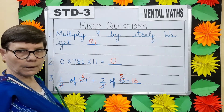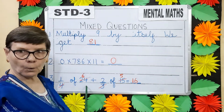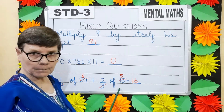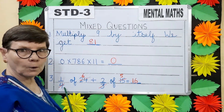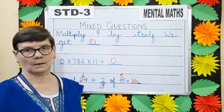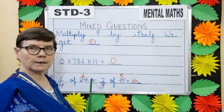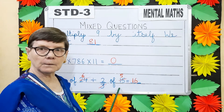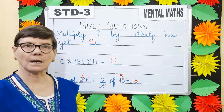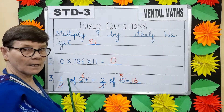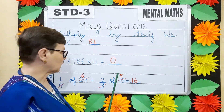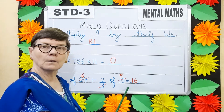Number 3: 1/4 of 24 plus 2/3 of 15. Now divide 24 by 4 — say your 4 times table till you come to 24. 4 sixes are 24. Now divide 15 by 3 — 3 fives are 15. So 6 plus 10 gives you 16.